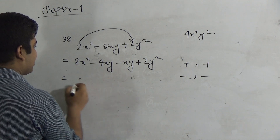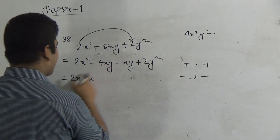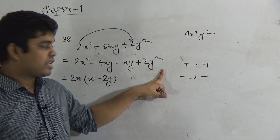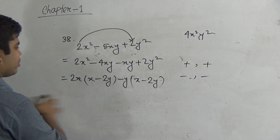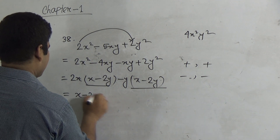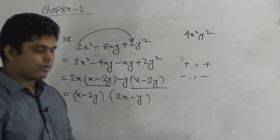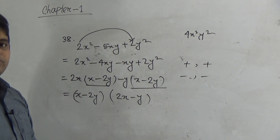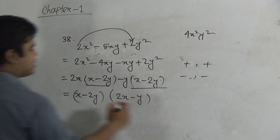From the first two terms, we take 2x as common: dividing 2x² by 2x gives x and 4xy by 2x gives 2y, so we get 2x(x minus 2y). From the last two terms, minus y is common, giving minus y(x minus 2y). From the whole expression, (x minus 2y) is common and we get (x minus 2y)(2x minus y). So the factors of 2x² minus 5xy + 2y² are (x minus 2y)(2x minus y). This is the answer.